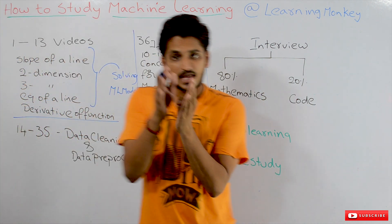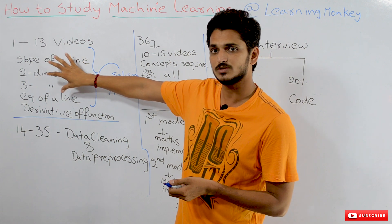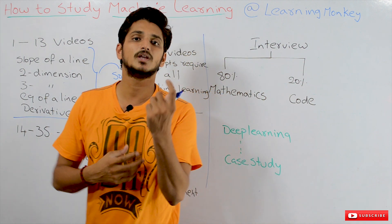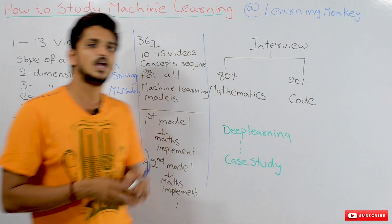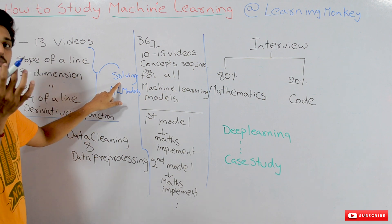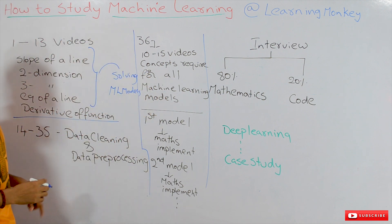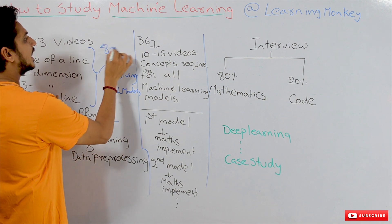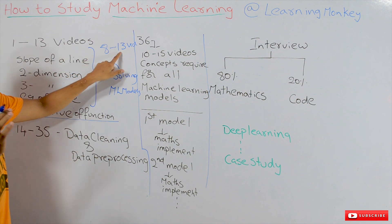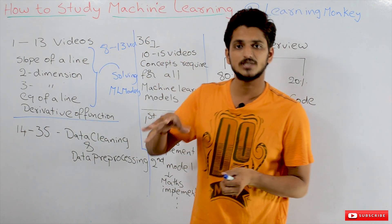This is very important: the transition from basic concepts to how they are interconnected and helpful in solving machine learning models. We take the first basic machine learning model — linear regression — and show you both graphically and mathematically how these concepts apply. This transition happens in videos 8 through 13, and these 5 videos are very, very important. Concentrate much on these videos.